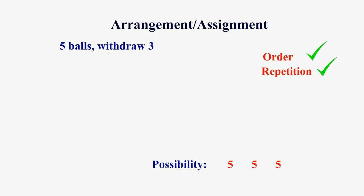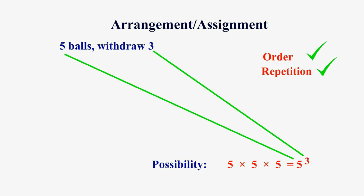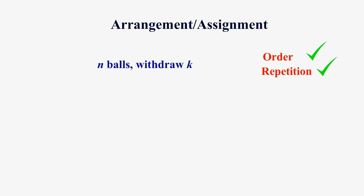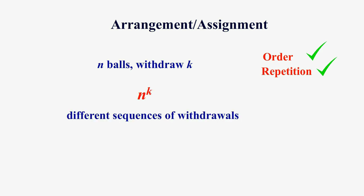Now let's look at the possibilities. The first withdrawal has five possibilities, the second withdrawal has five possibilities, and the third is also five. So the total possibilities are five times five times five, which equals five to the power of three. The five corresponds to the number of balls, and the three corresponds to the number of withdrawals. So in general, if we have n balls in the basket and k withdrawals, then there are n to the power k possible sequences of withdrawals.